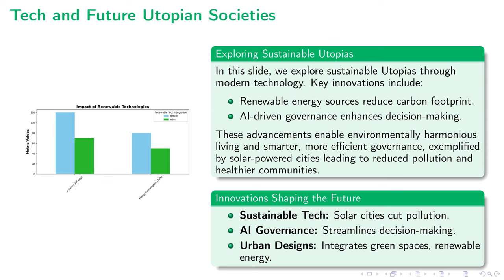Technology breathes life into sustainable utopias. Renewable energy in particular is foundational — solar-powered cities are an excellent testament to this, countering pollution and promoting healthier communities. These green technologies are indispensable for a utopia in the modern world. But it's not just about powering our cities; the efficiency and effectiveness of our governance systems is also critical. Artificial intelligence stands ready to transform this landscape, with AI capable of streamlining processes for optimized governance.